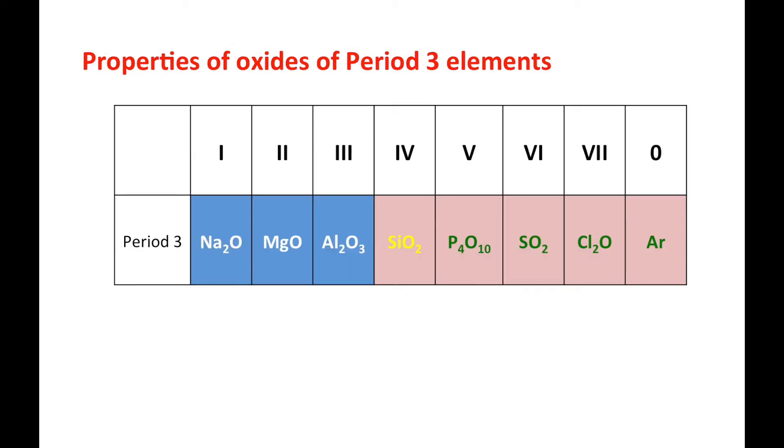For the final part in this chapter is the properties of oxide in period 3 elements. So here, once again, I highlight the periodic table with different colors to let you know the bonding and structure of different oxides.